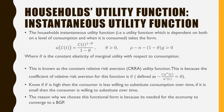The household's instantaneous utility function — which is dependent both on the level of consumption and when it's consumed — takes the form U(Ct) = Ct raised to the power of (1 minus theta) all over (1 minus theta), where theta is greater than 0, and the identity rho minus N minus (1 minus theta) times G is greater than 0. Here, theta is the constant elasticity of marginal utility with respect to consumption. This is known as the constant relative risk aversion utility function, because the coefficient of relative risk aversion for this function is theta. If theta is high, the consumer is less willing to substitute consumption over time; if it is small, the consumer is more willing to substitute over time. We choose this specific functional form because it is necessary to solve for an economy that converges to a balanced growth path (BGP).